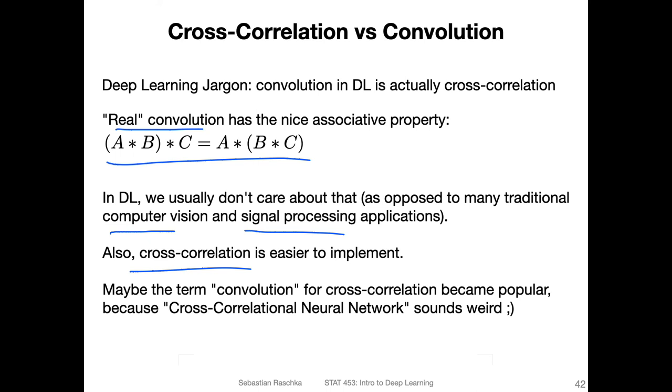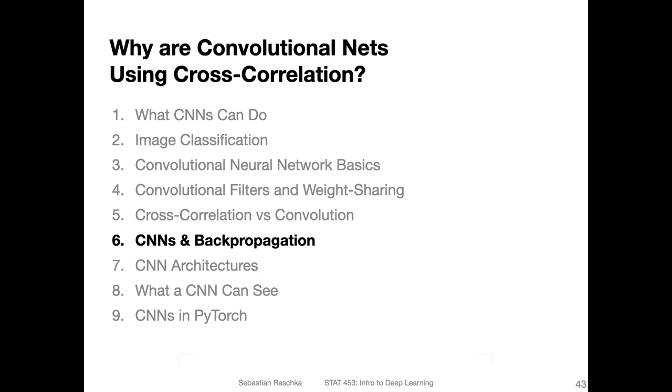But then when we or if we implement cross-correlation for these networks, why do we call them convolutional networks? Why don't we call them cross-correlational networks? Yeah, my theory is just that cross-correlational network sounds a little bit weird and convolutional network sounds slightly cooler. So that's maybe also one aspect about the whole thing. Anyways, so this video was not really important. I was just highlighting the difference in case someone was wondering. In the next video, I want to briefly go over CNNs and backpropagation, but we won't go into any mathematical details. So don't be afraid.